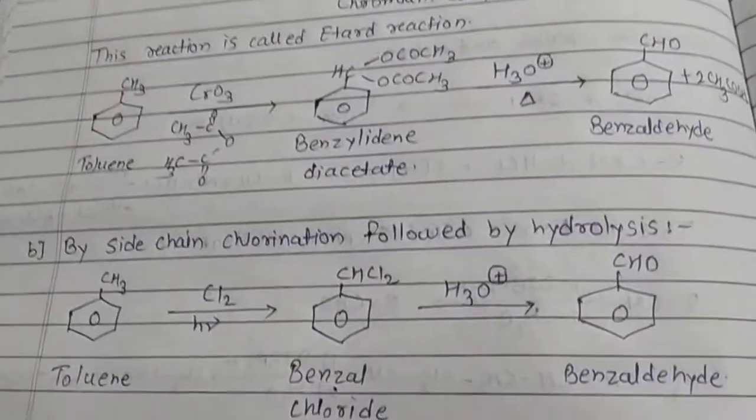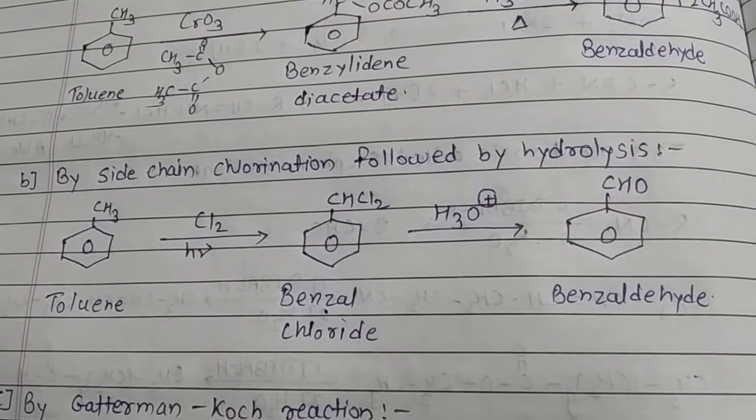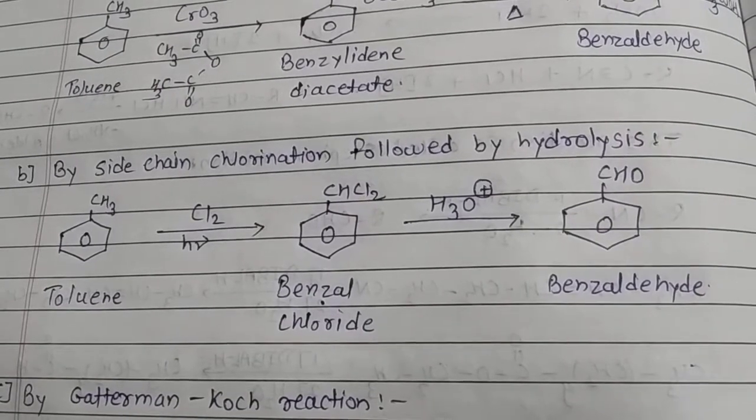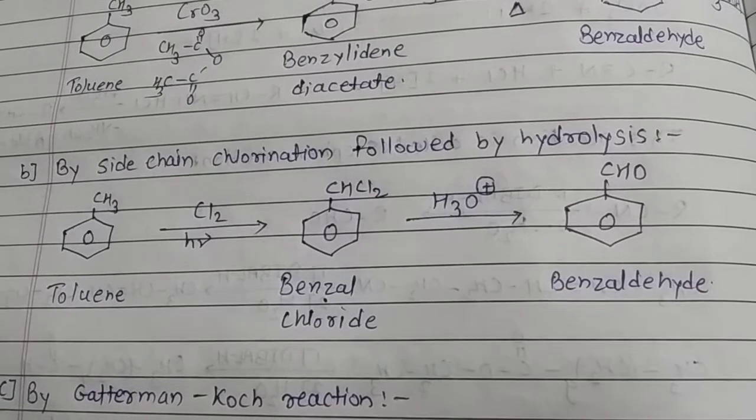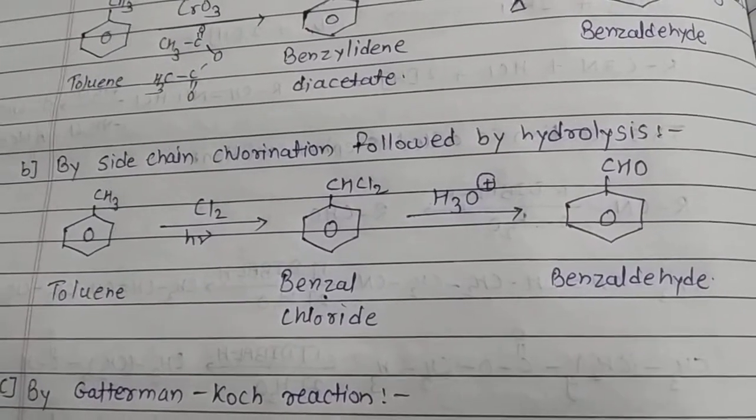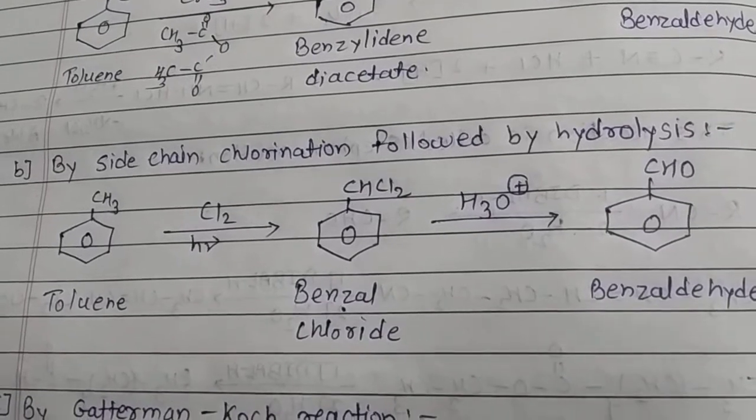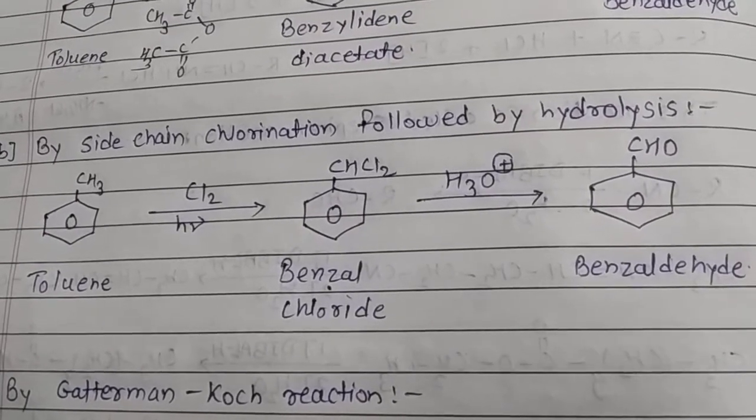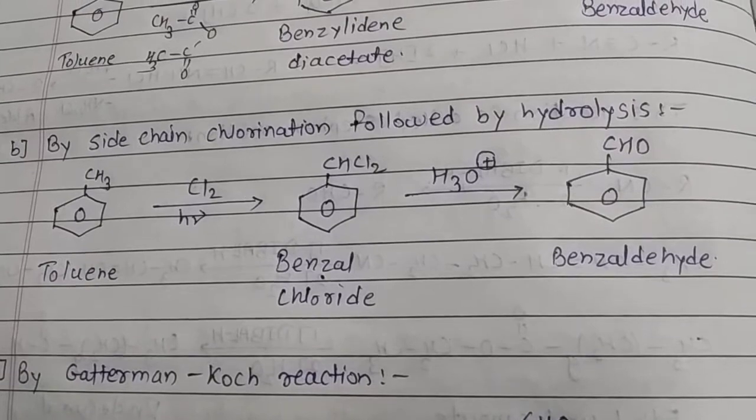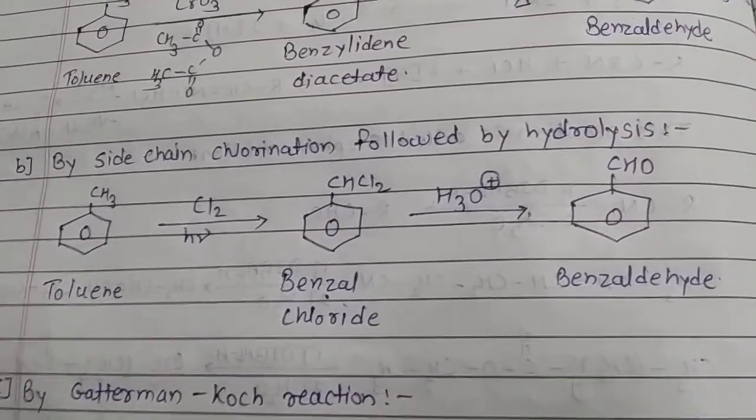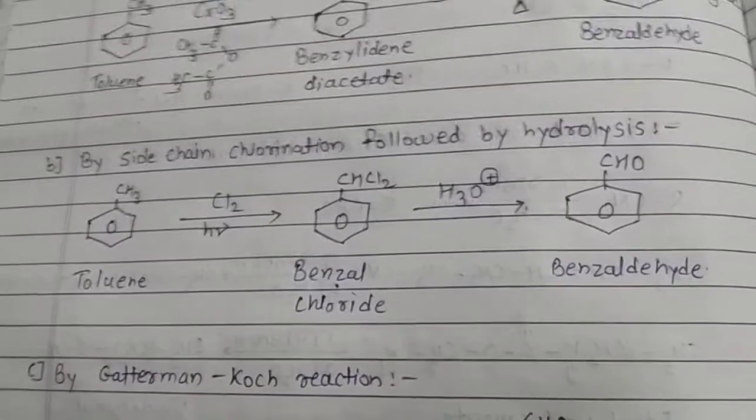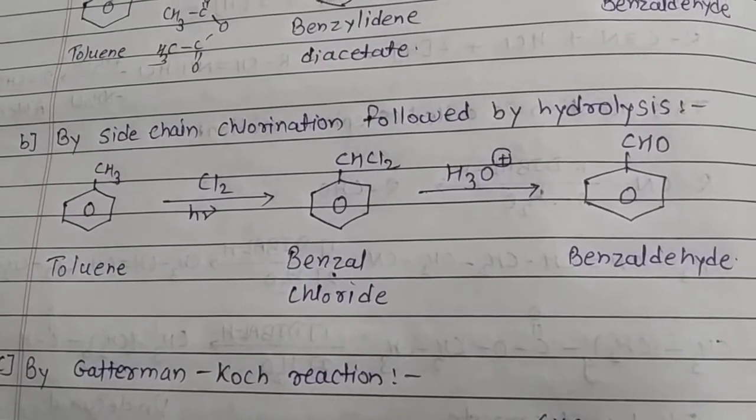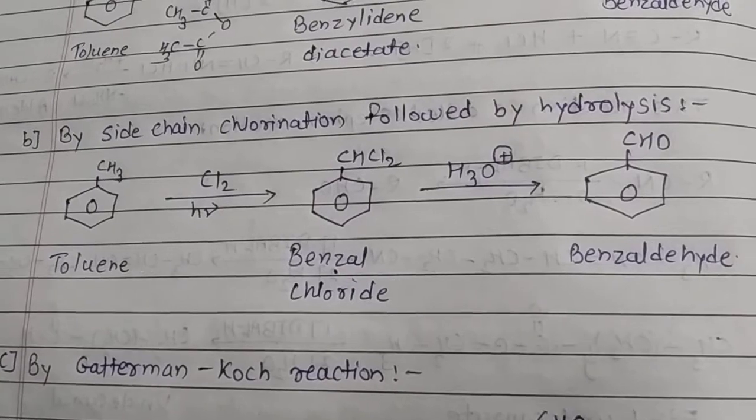Next preparation is by side chain chlorination followed by hydrolysis. In the presence of light, one of the hydrogens gets replaced by chlorine. The mechanism is a free radical reaction: initiation, propagation, termination. The hydrogen is removed and chlorine gets attached. When treated with hydronium ion, it gets converted into benzaldehyde. Toluene gets converted into benzal chloride first, and by treatment with hydronium ion it gets converted into benzaldehyde. This is known as side chain chlorination followed by hydrolysis.